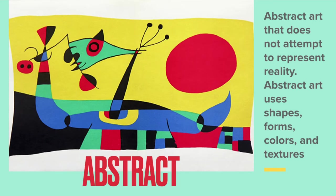Abstract art does not attempt to represent reality. It uses shapes, forms, colors, and textures. As we can see here, he has tons of different shapes, colors, lines, and textures. It's really important to make sure we're taking a lot of inspiration from his work. Sometimes you can't really tell what it's supposed to be, and that's all right — that's what I love about abstract art: it's about imagination and creativity.